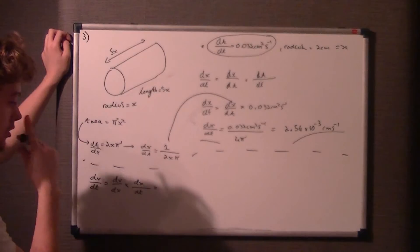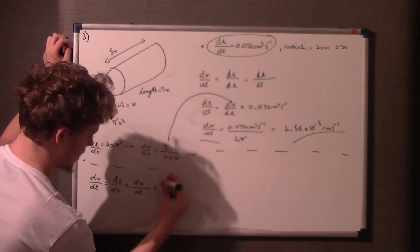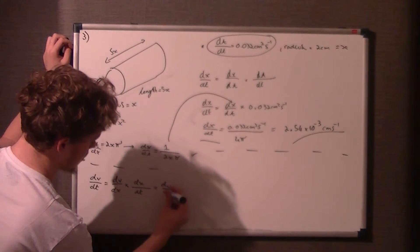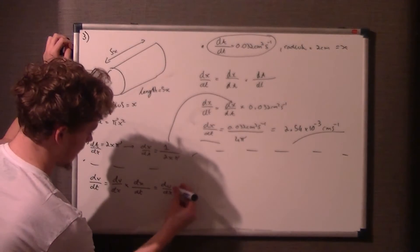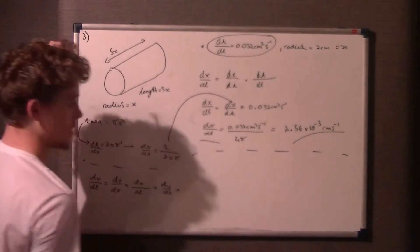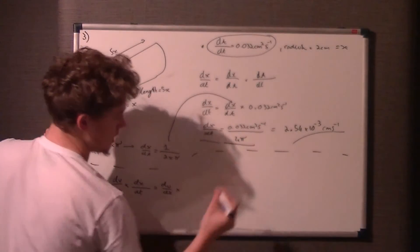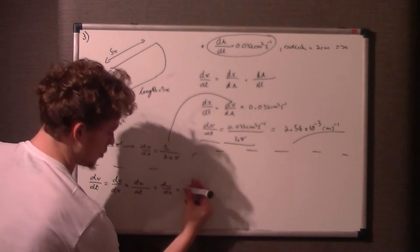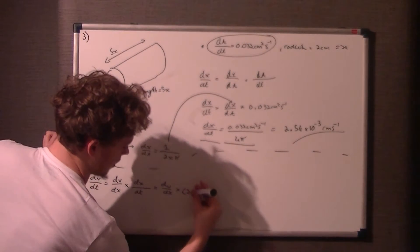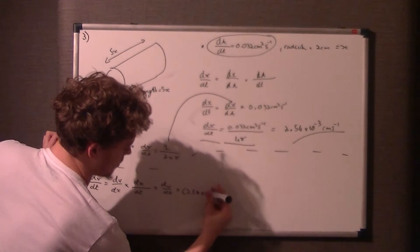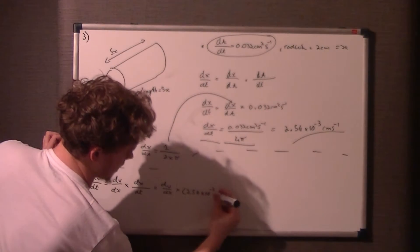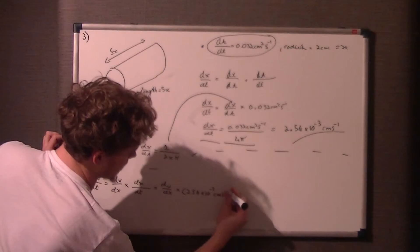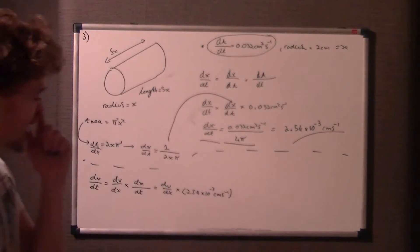So again, do what we did before, sub in what we know. So we don't know dv/dx. So just leave it as dv/dx times dx/dt. Well that's what we just worked out. So you can either sub it in as this equation or just the actual value figure, which I would leave in your calculator as an answer if you wanted to. So times 10 to the minus 3 centimeters per second.